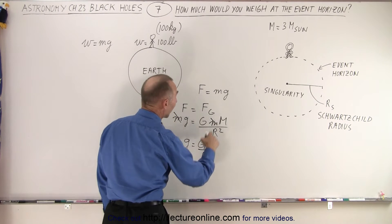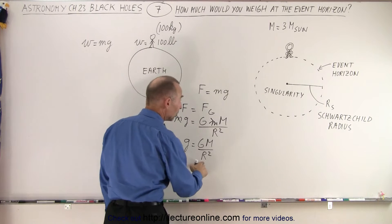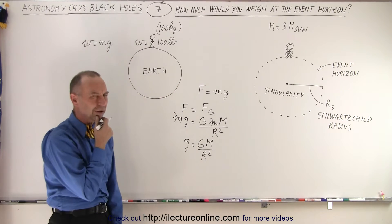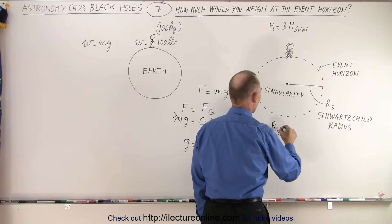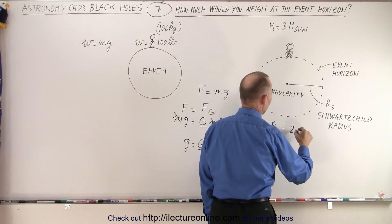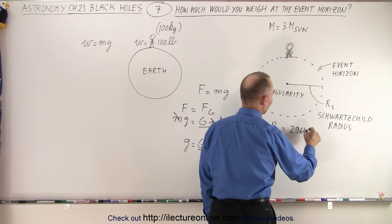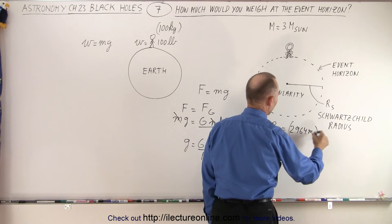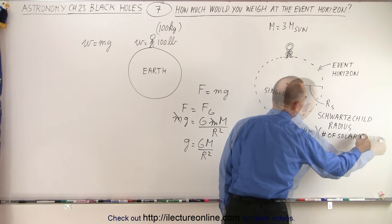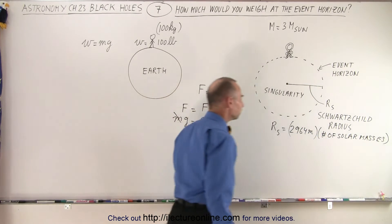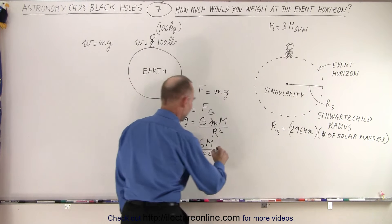and all we have to do is plug in the mass, which is three solar masses, and the radius. Of course, now we have to figure out what the Schwarzschild radius is, and remember, the Schwarzschild radius was equal to 2,964 meters multiplied times the number of solar masses. Like that. Okay, let's plug that in here and see what we get.